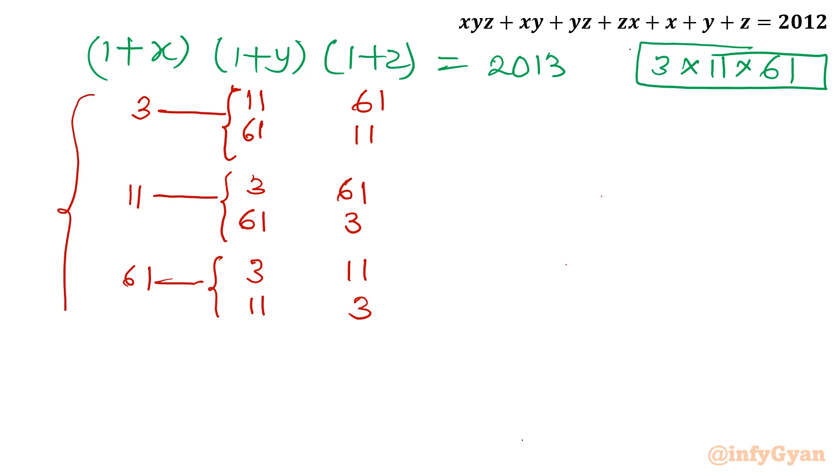So there are total 6 triples. Let me write now here x, y and z. Actually, we have to find out x, y, z value. So I will write x, y, z. When 1 plus x is 3, then x will be 2. The first value is 3, then x must be 2.